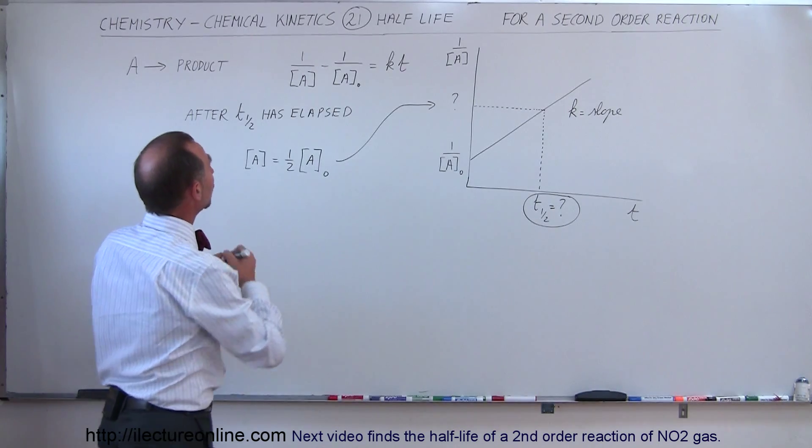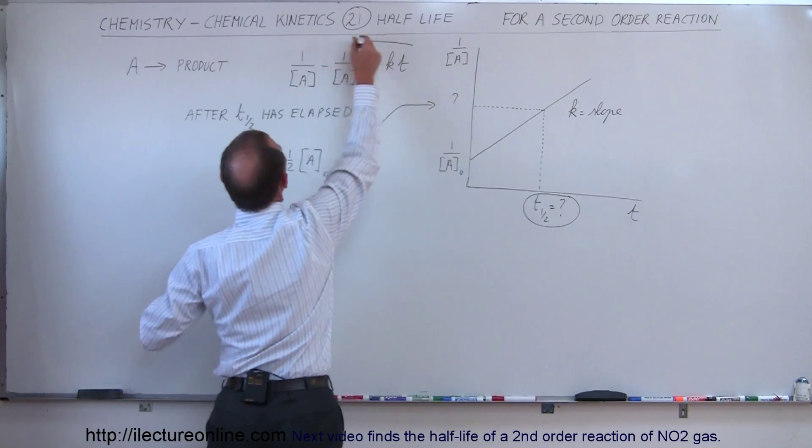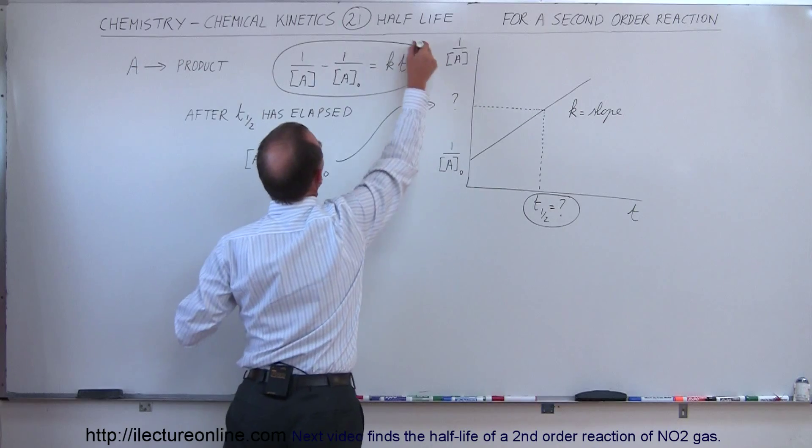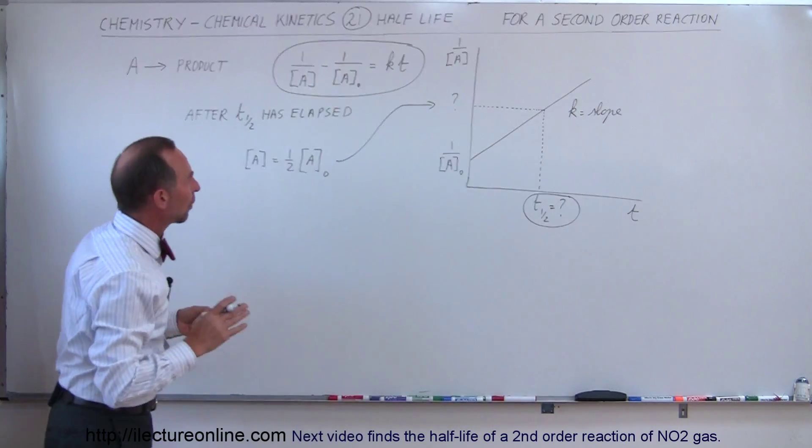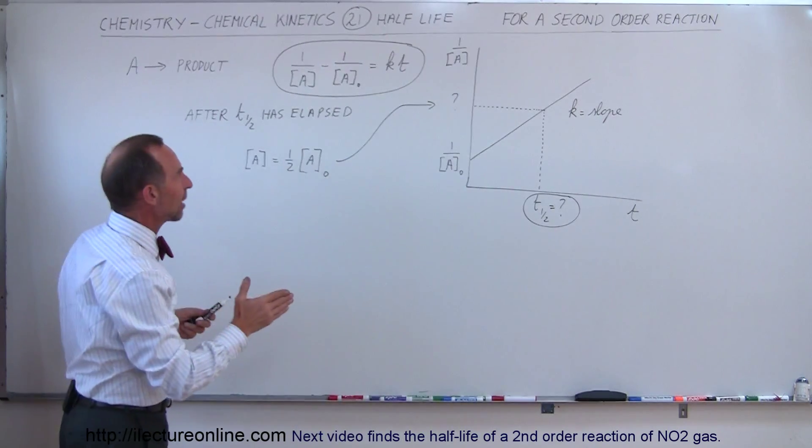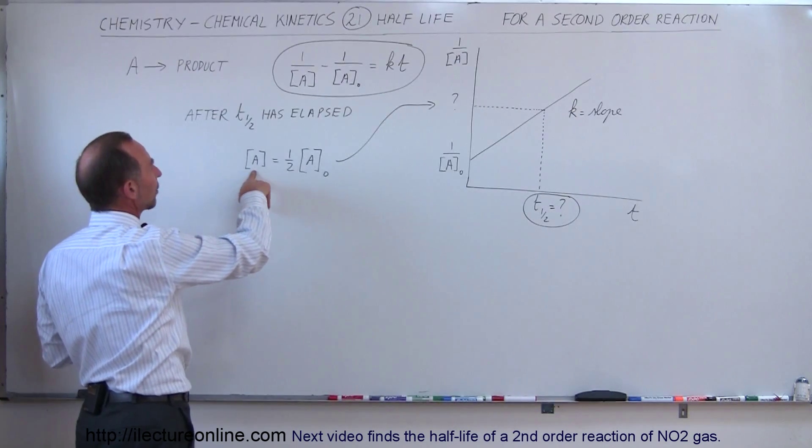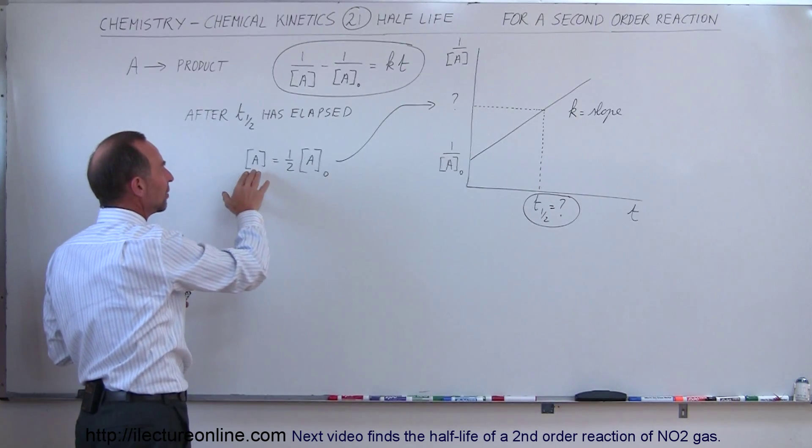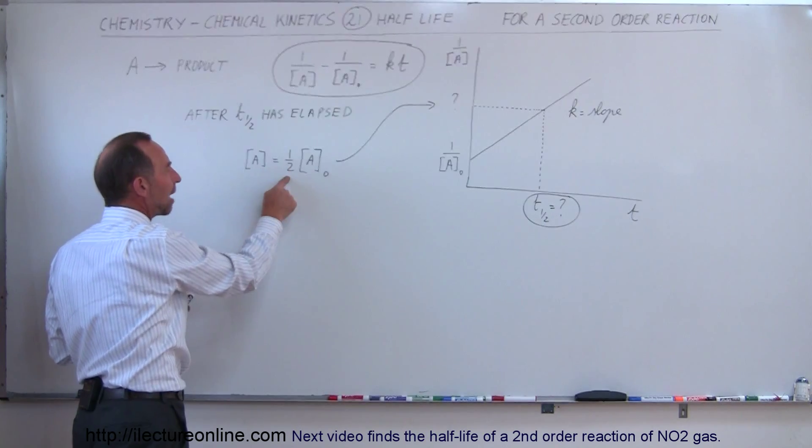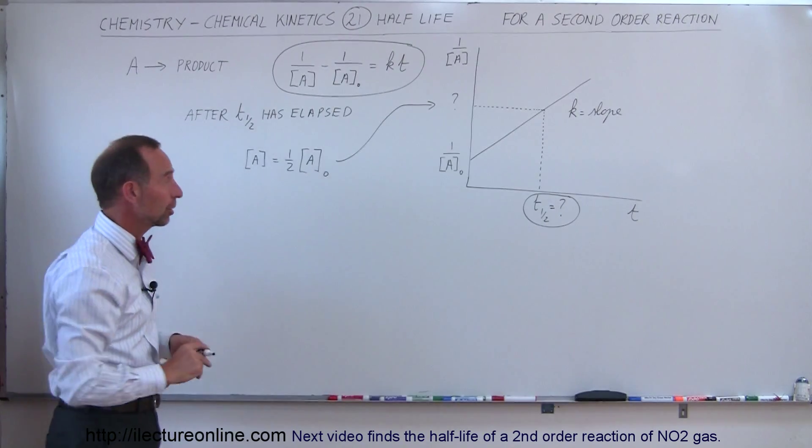And so here we have the equation that determines the relationship between the time and the concentration of the reactants. And so now what we're trying to find is what is the half-time when half of the concentration has disappeared. So that means that the remaining concentration is now half of what it was when the reaction started.